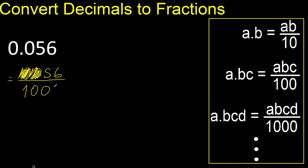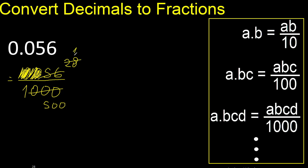1, 2, 3. Can be simplified because can be divided by the same number — divided by 2, divided by 2, 28. Divided by 2, 500, can be divided by 2. Divided by 2, divided by 2. Ok, can be divided by 2. Ok.